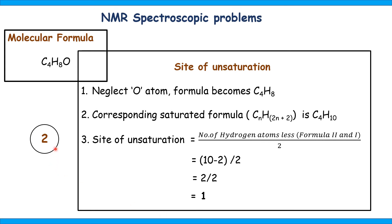Example 2: the molecular formula is C₄H₈O. Neglect the oxygen atom; the formula becomes C₄H₈. The corresponding saturated formula for four carbon atoms is C₄H₁₀. The site of unsaturation equals (10 minus 8) divided by 2, that is 2 divided by 2, equal to 1. This compound contains either a carbon-carbon double bond or a carbon-oxygen double bond — such information we get from the site of unsaturation.